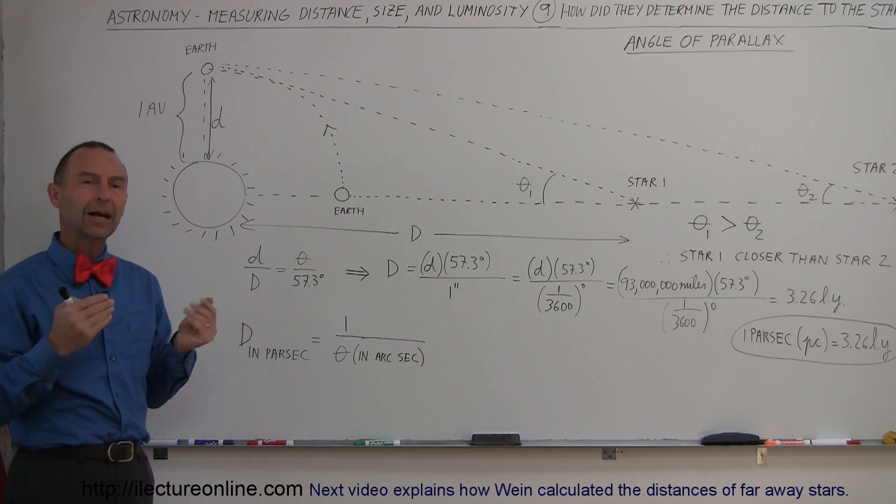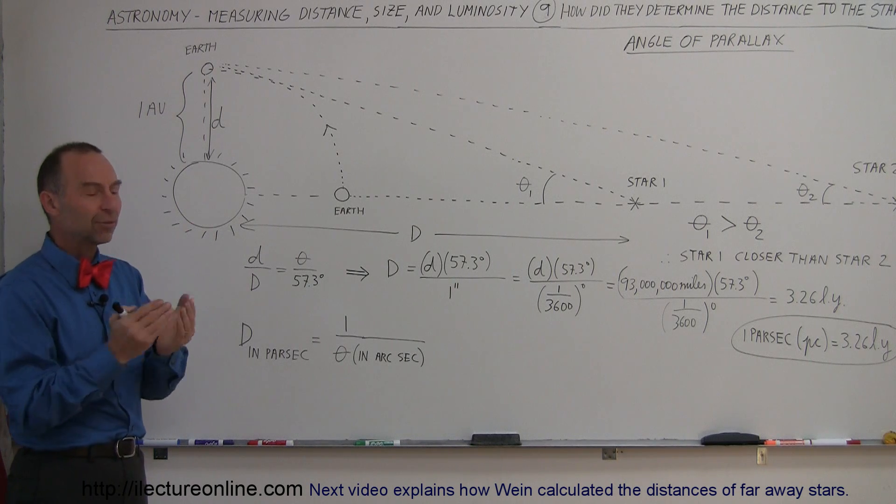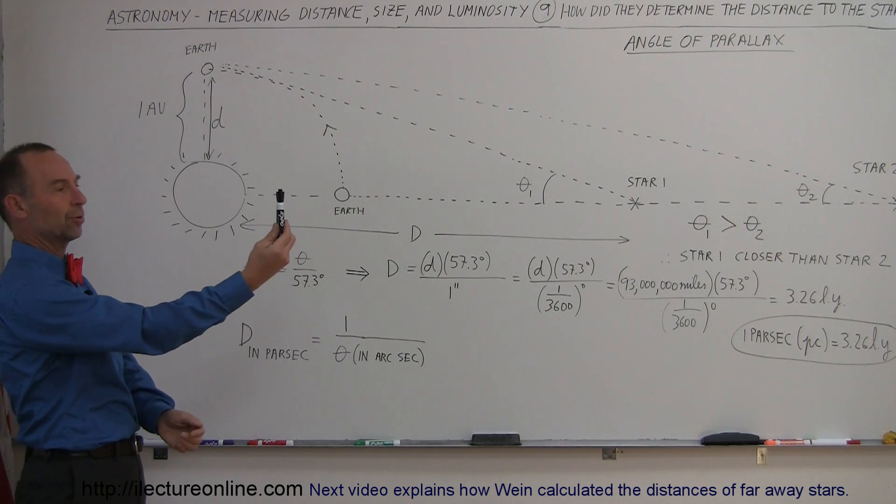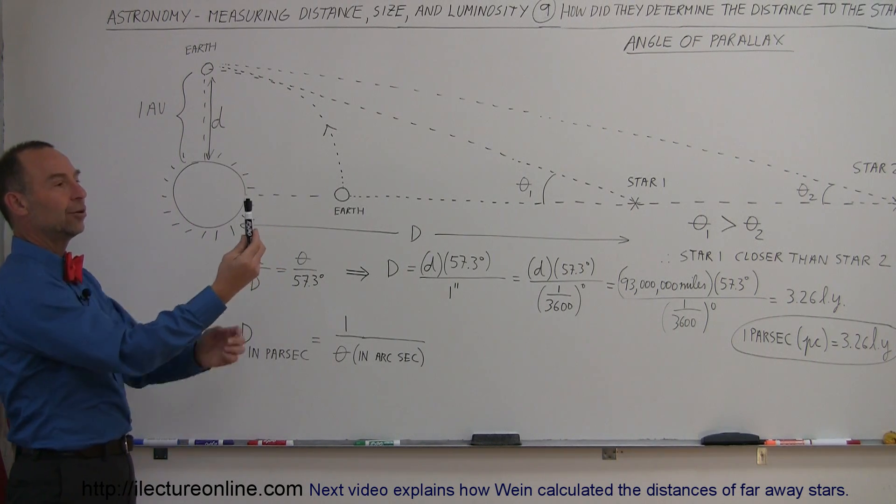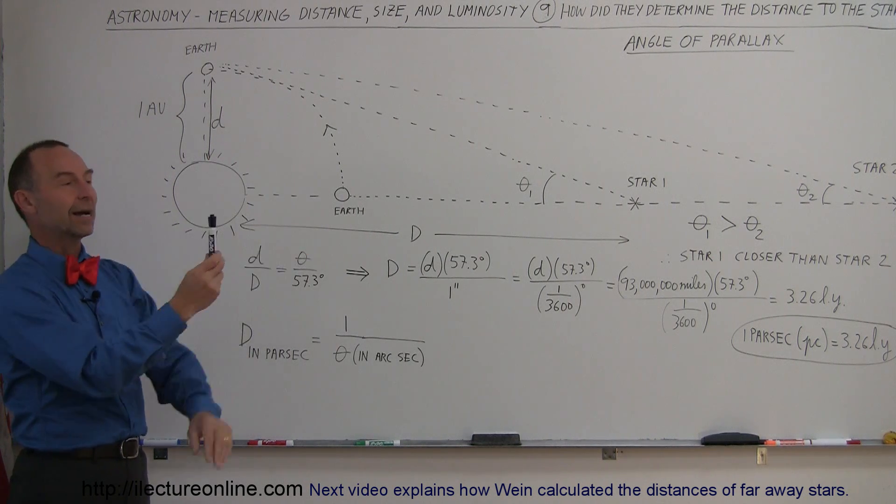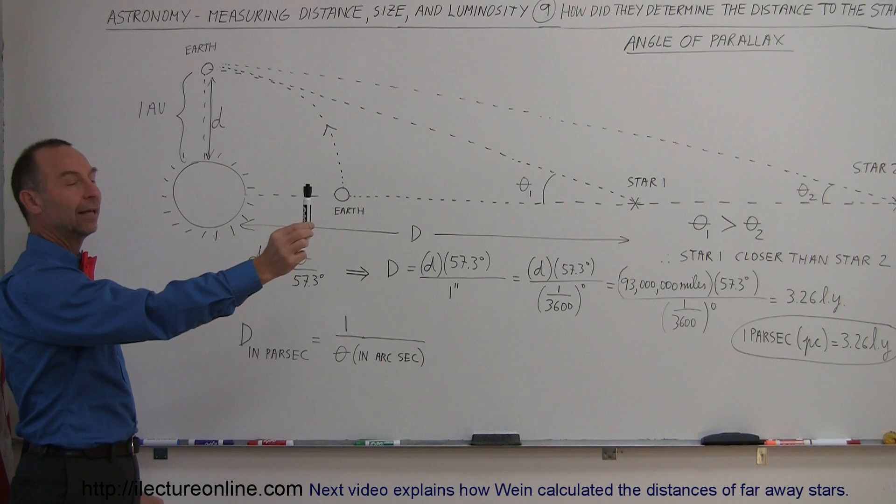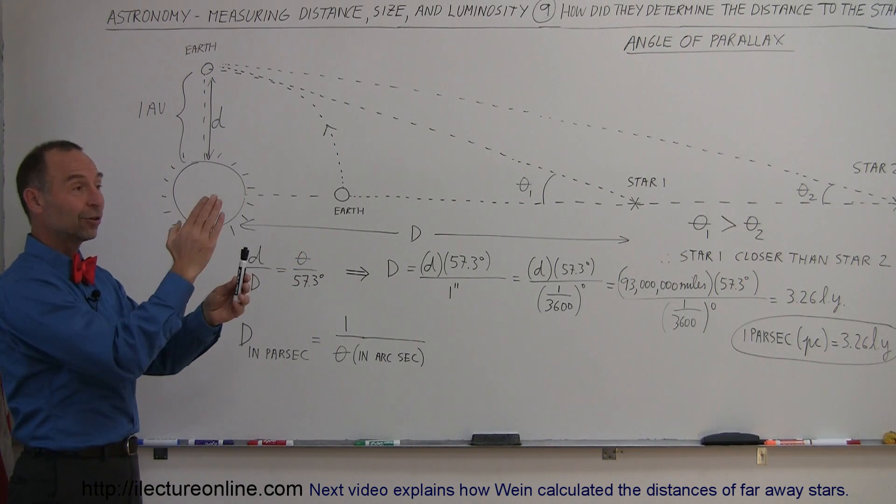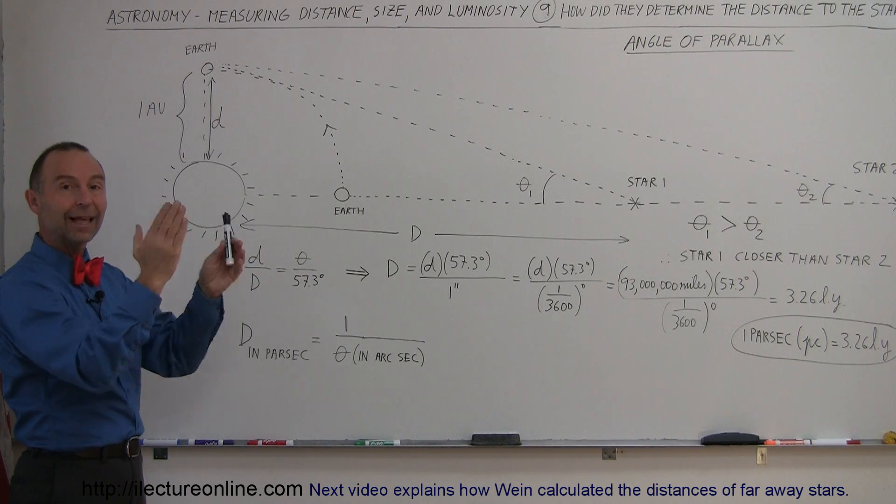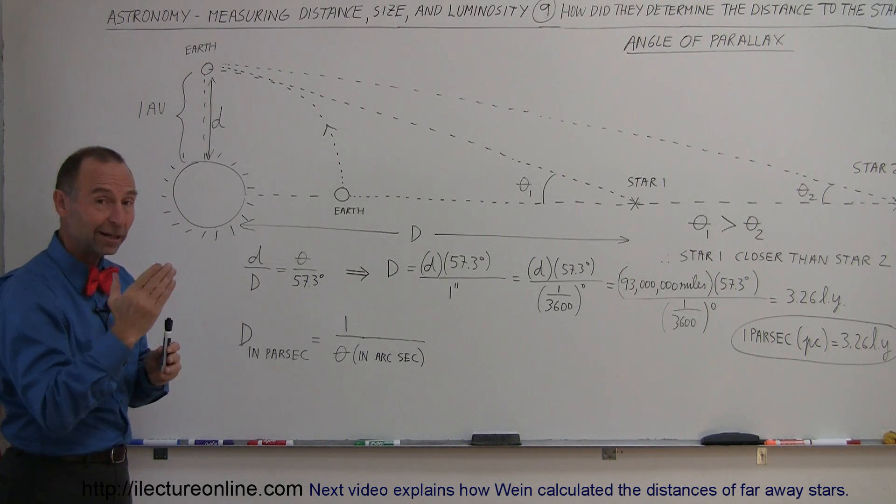One way in which you can kind of simulate how this method works is, let's say you look at an object that is not too far away, like let's say you put your pen in front of it, and you have another object that's farther away behind it. So you kind of angle it right towards another bigger object behind it, and then you look at it with your left eye, and then you look at it with your right eye, and all of a sudden you see the object jump. That's the angle of parallax. So try that, try it at home.